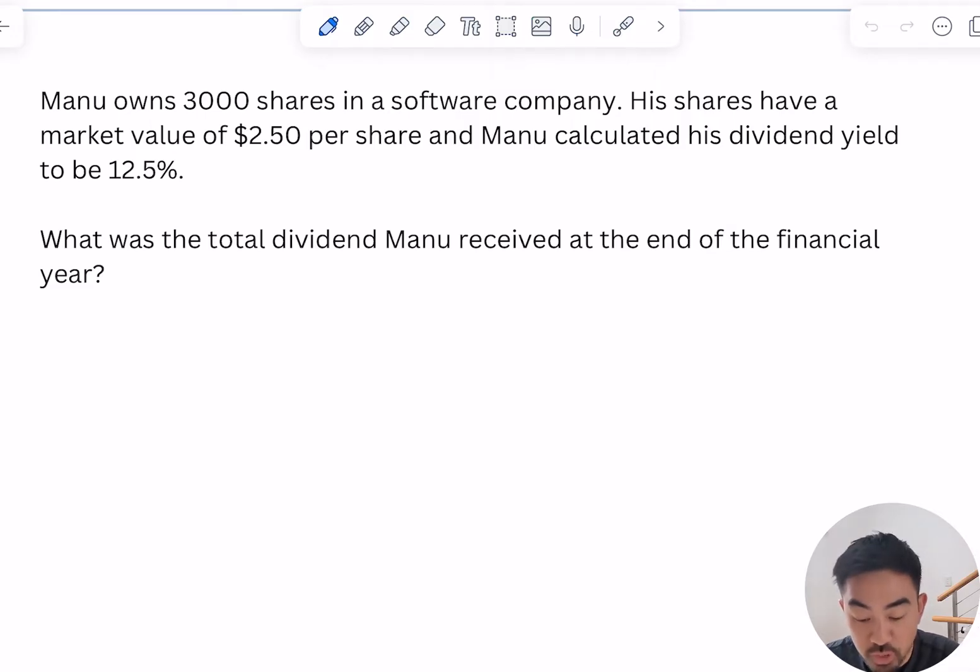Here's the first question. Manu owns 3,000 shares in a software company. His shares have a market value of $2.50 per share and Manu calculated his dividend yield to be 12.5%. What was the total dividend Manu received at the end of the financial year? So you can kind of think of dividend yield as just a commission on what he owns, or in other words, if it's even simpler, just a percentage of the total amount of shares.